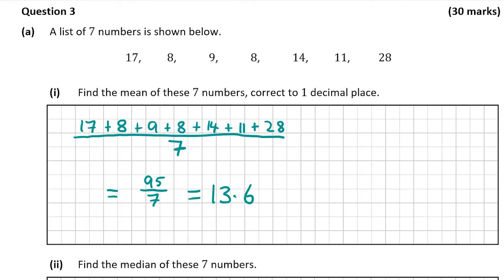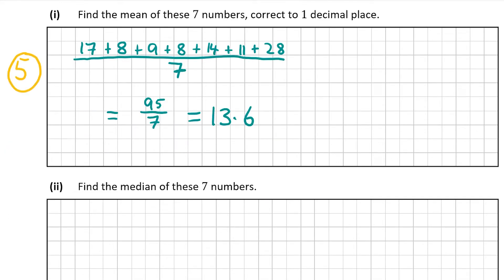That was worth 5 marks. Now let's have a look at part 2. Part 2 wants us to find the median of the numbers. The median is the number in the middle of the data set that's ordered from lowest to highest. So let's put our numbers in order.